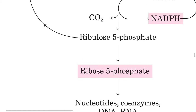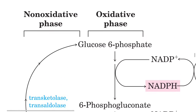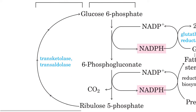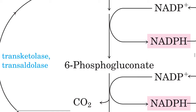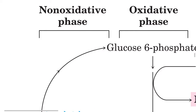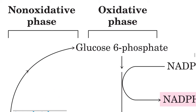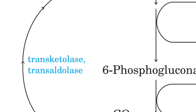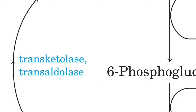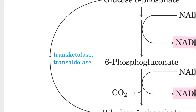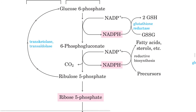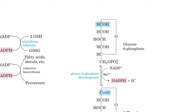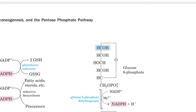To continue the pathway, a non-oxidative phase is performed, in which ribulose-5-phosphate, through a series of reactions, is converted back into glucose-6-phosphate. The key enzymes of this non-oxidative phase are transaldolase and transketolase. These are the two phases of the pentose phosphate pathway, which we will discuss one by one.